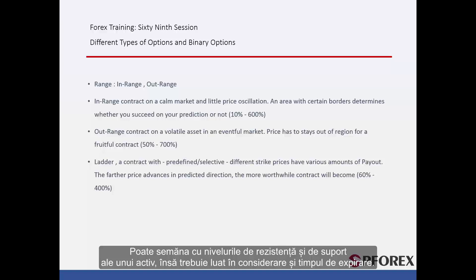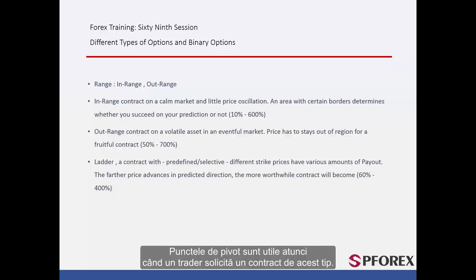However, expiration time must be considered as well. Pivot points are beneficial when a trader is dealing a contract on this type. Payout would be from 60% to 400%, affected by the level value plus expiration time.